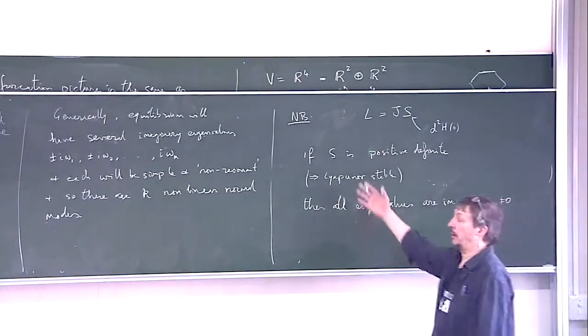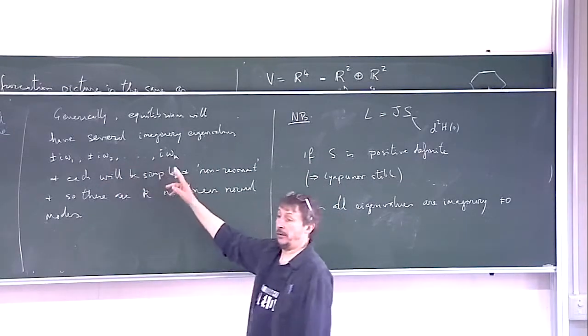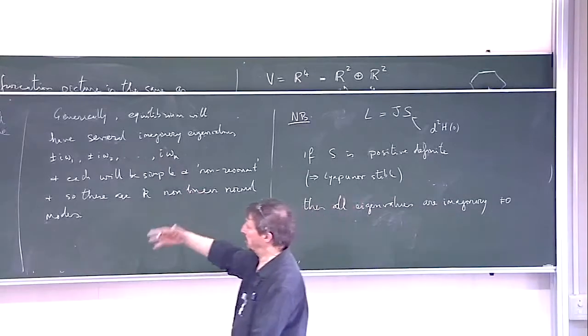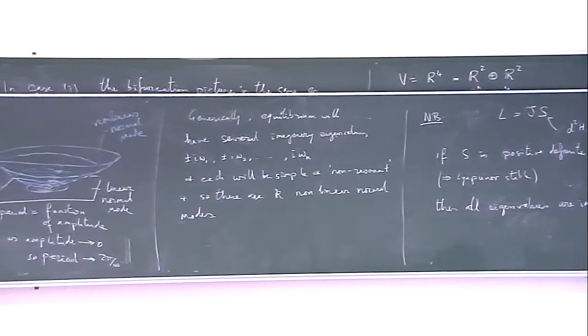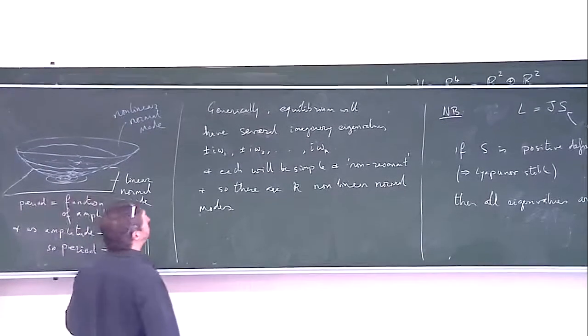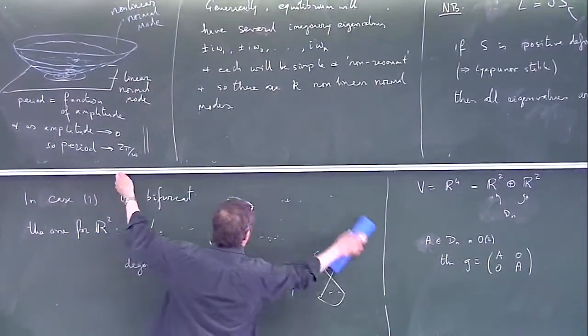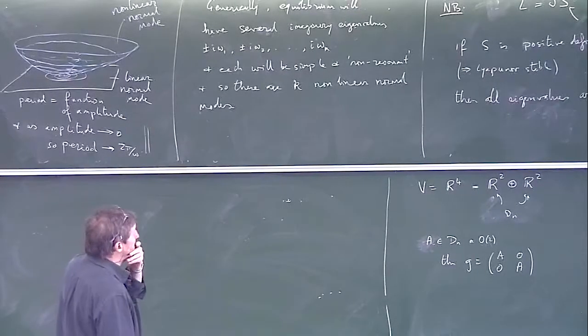So typically, generically, you would have if we're in R2N, we would have N different eigenvalues, and so you'd have N different families of periodic orbits that look like this. So it's a good theorem. Then you can go further and talk about maybe approximate integral system and KAM theory and have invariant tori and things like that, but I'm not going to go in that direction today.